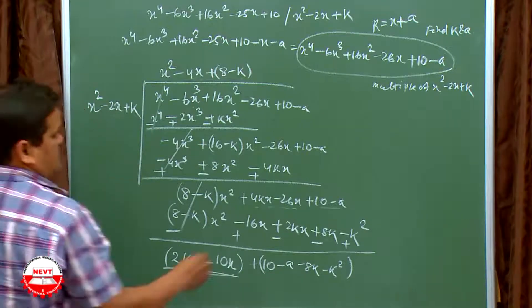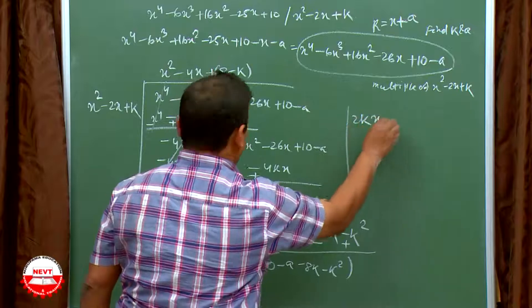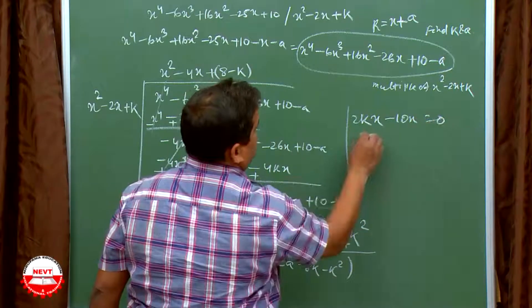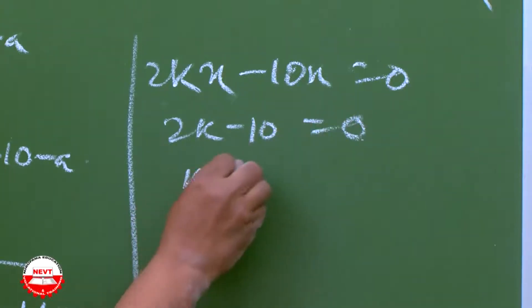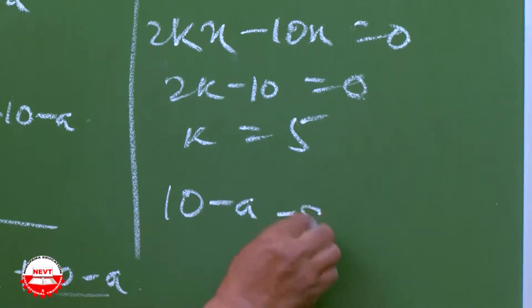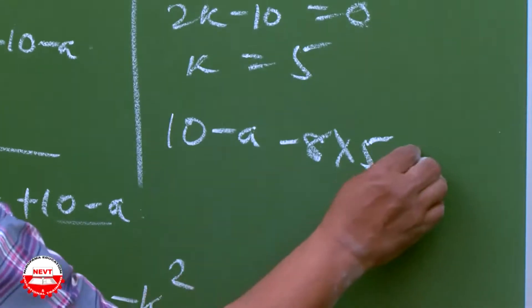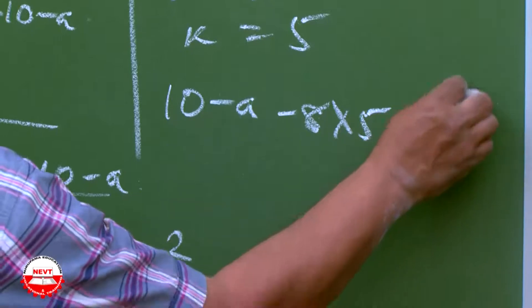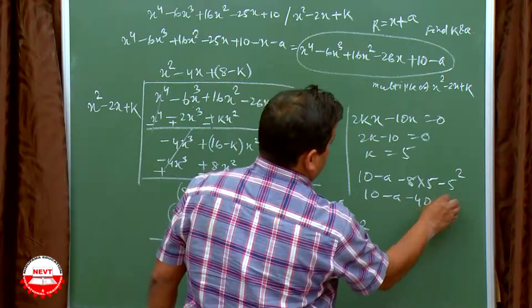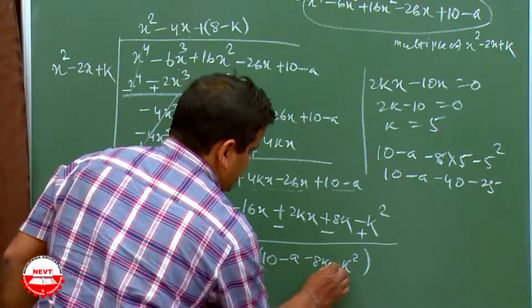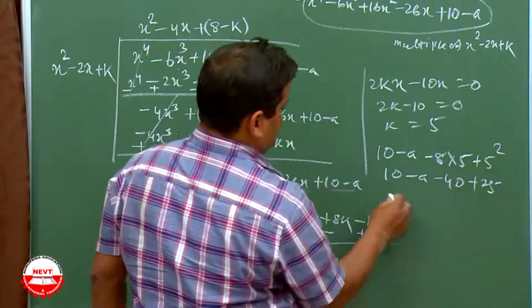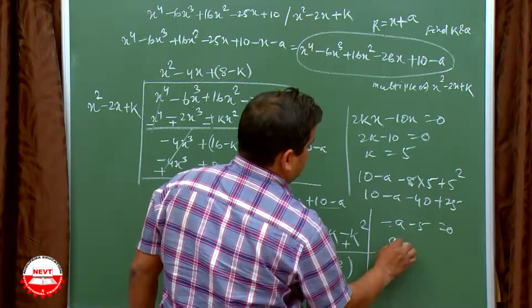Equating the remainder to 0: coefficient of x gives 2k minus 10 equals 0, so k equals 5. For the constant part: 10 minus a minus 8(5) plus 5² equals 0, giving 10 minus a minus 40 plus 25 equals 0, so minus a minus 5 equals 0, therefore a equals minus 5.